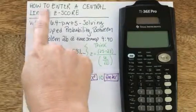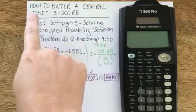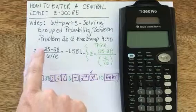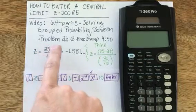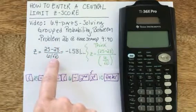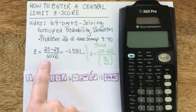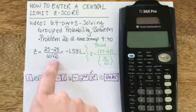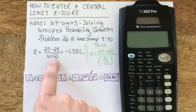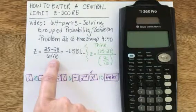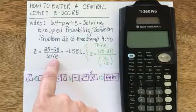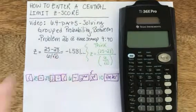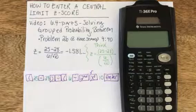I'm going to show you how to enter a central limit z-score, where it's a z-score of data value minus the mean over the standard deviation. Because the standard deviation is specific to a sample size — in this case 10 — the denominator is a little more complicated, so the keystrokes on the calculator are a little more complicated.